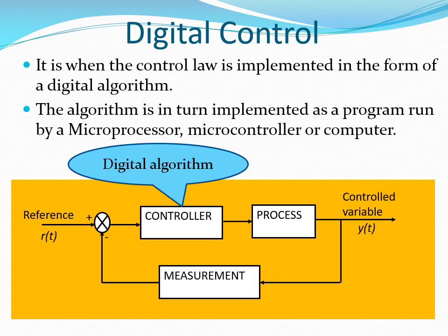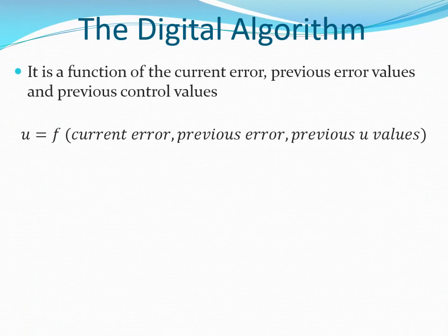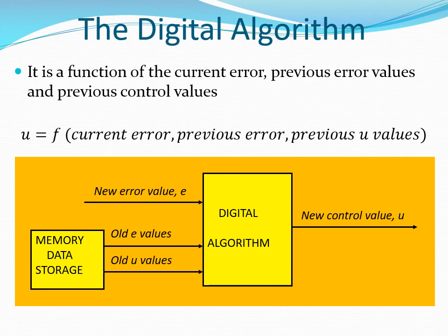The block diagram shows a control system in which a controller is in the form of a digital algorithm. The digital algorithm is a function of the current error, previous error values, and previous control values. The previous error and control values are stored in memory. The microprocessor or microcontroller can then fetch these values from memory, read the current error value, then apply the algorithm to generate a new control value that is going to be sent to the process.